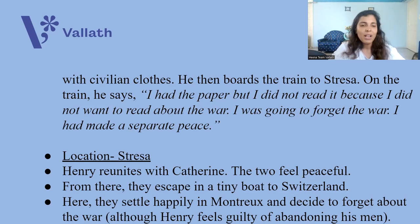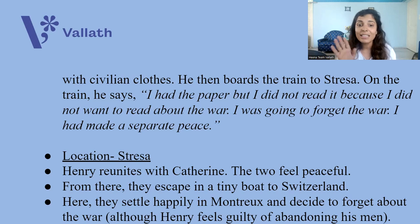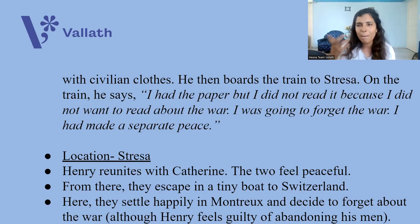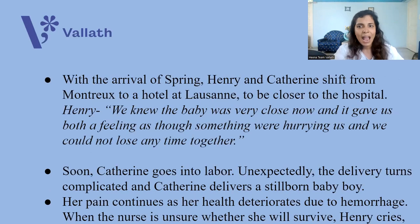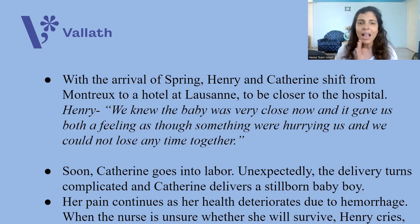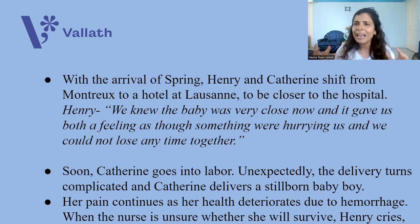In Milan, Henry visits his friend Simons, who provides him with civilian clothes. He boards a train to the town of Stresa in Italy and reunites with Catherine. The two feel peaceful in each other's arms and escape in a tiny boat to Switzerland, settling happily in Montreux, a beautiful alpine town in Switzerland. They decide to forget about the war, though Henry feels guilty now and then about abandoning his men at the front. In spring, Henry and Catherine shift from Montreux to a hotel at Lausanne to be closer to the hospital for the delivery. Henry said: 'We knew the baby was very close now and it gave us both a feeling as though something were hurrying us and we could not lose any time together.'